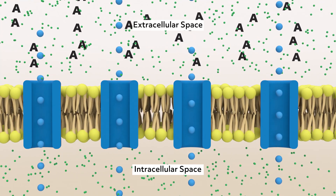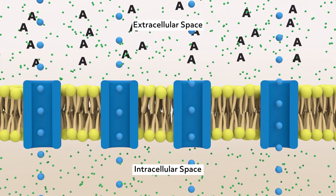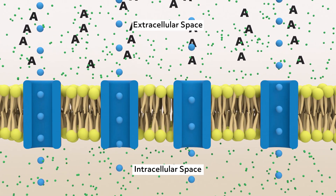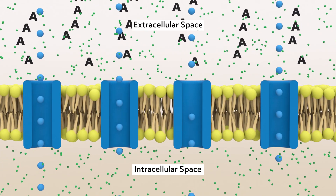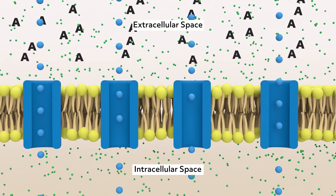Finally, let's look at osmosis. Consider a cell with a large concentration of substance A in the extracellular fluid. The system would like to achieve an equilibrium where the concentration of A is the same on the inside and outside of the cell.